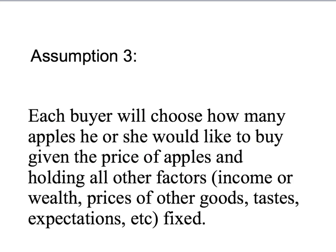Our third assumption is called our price-taking assumption for buyers. We're going to assume that each buyer will choose how many apples he or she would like to buy, given the price of the apple, and holding all other factors — such as the person's income or wealth, the prices of other goods such as oranges and bananas, the person's taste, their expectations, and everything else — fixed. So: how many apples would the buyer like to buy, given the price of apples, holding everything else that could be relevant constant?